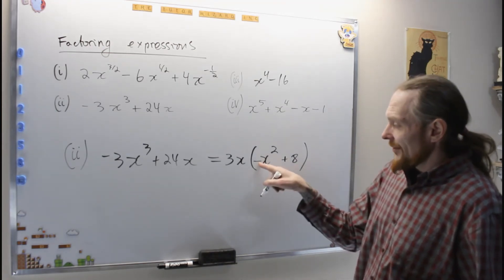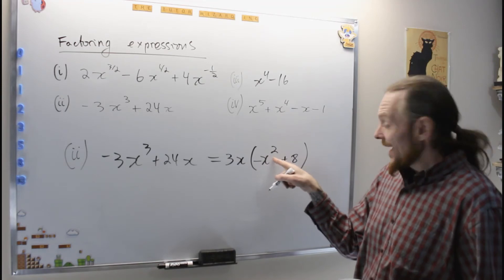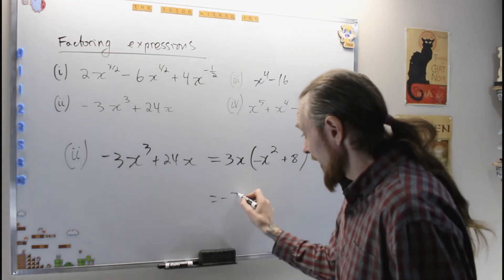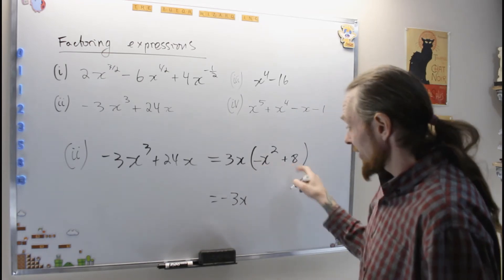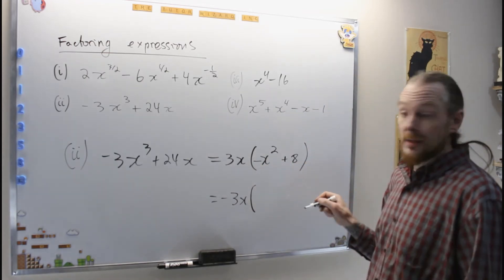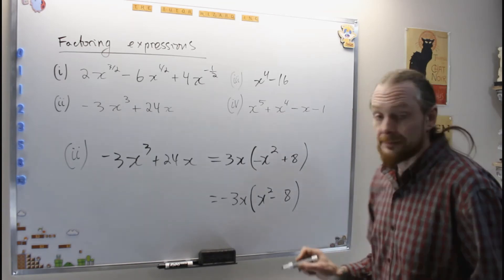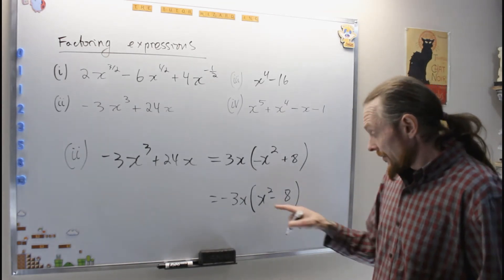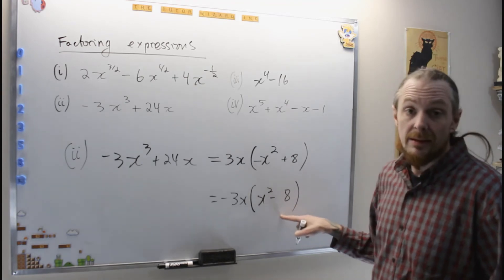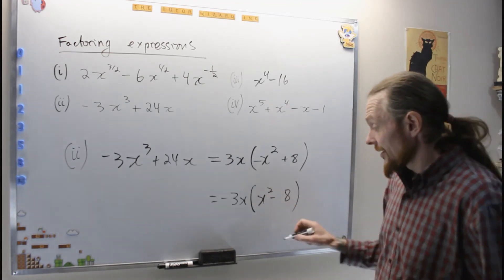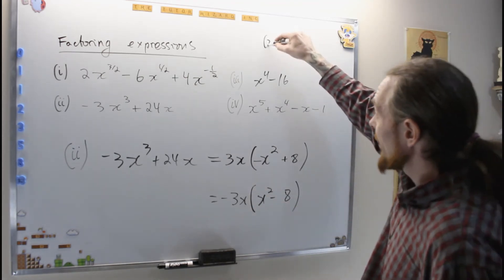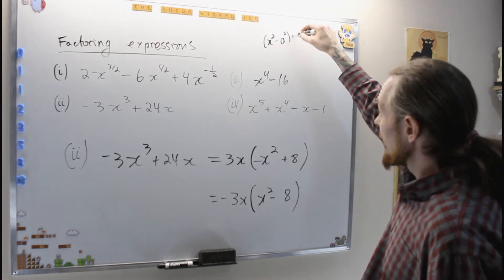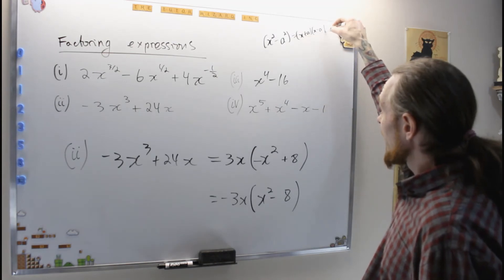So actually, I don't want the negative on the variable x squared. I want it on this constant, so I'm going to write this as negative 3x. I'm going to pull out an x and a negative out of both terms, and I get x squared minus 8. And so now what I'm going to do is factor this. And to factor this, remember, now we're going to use clever things like x squared minus a squared is equal to x plus a, x minus a.